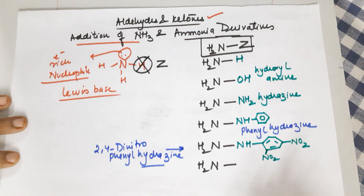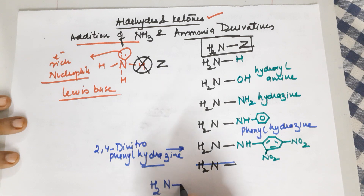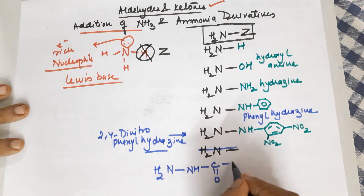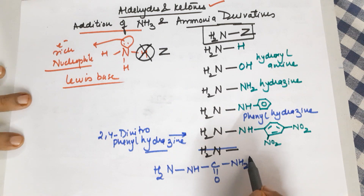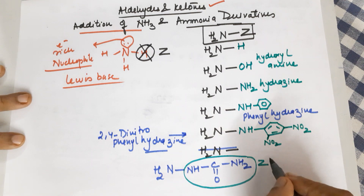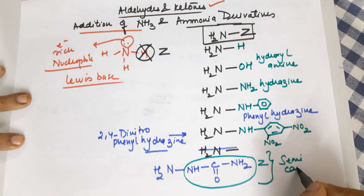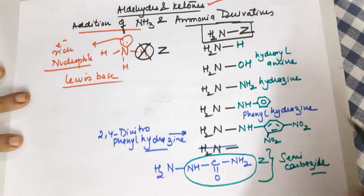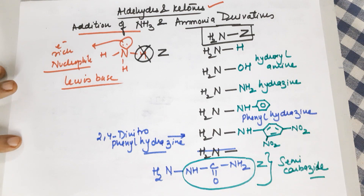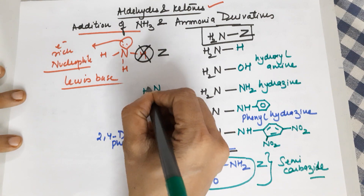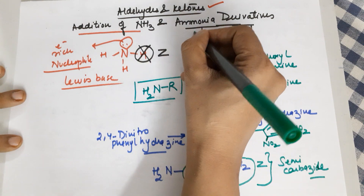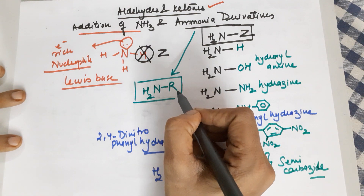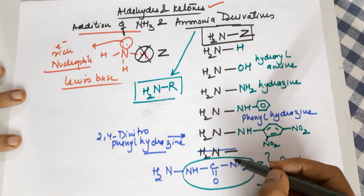Moving on to the last identity: where Z is NH-CO-NH2, this is called semicarbazide. These are the reactions we have to do in this topic — I will be reacting each one of them with aldehydes and ketones. You can also have a normal amine where Z changes to an R group, which also falls under the category of ammonia derivatives.